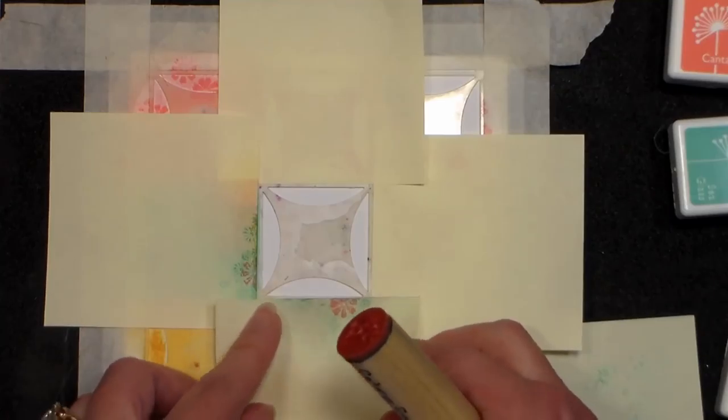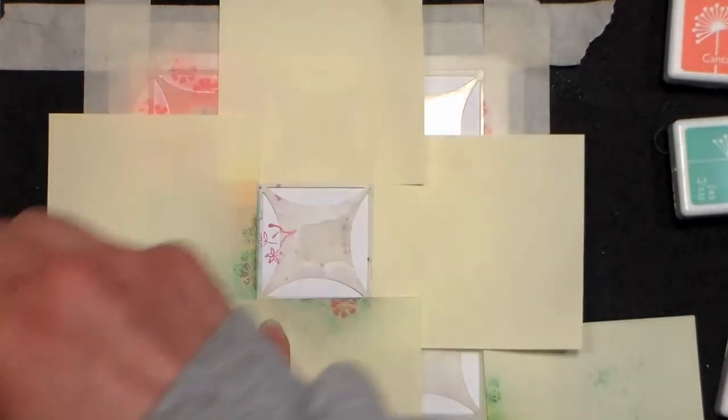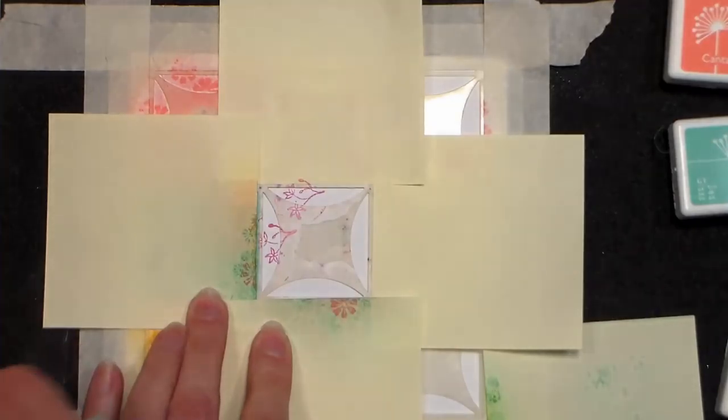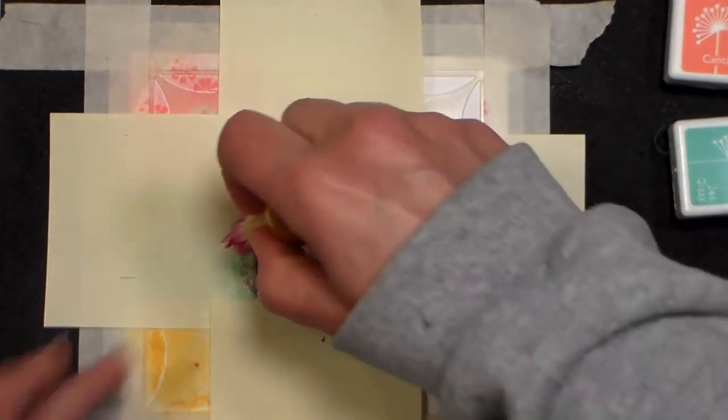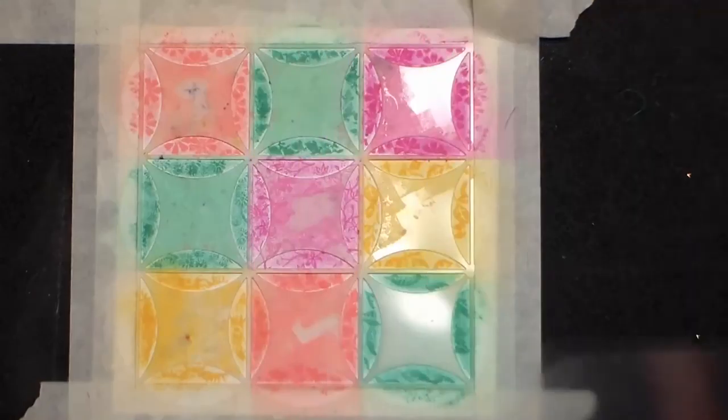I also think that having these colors against the white borders that are left behind by the stencil will be really fresh and cheerful looking. Make sure that you use a variety of different shapes and stamps to do your stamping so you'll get a bunch of different textures.